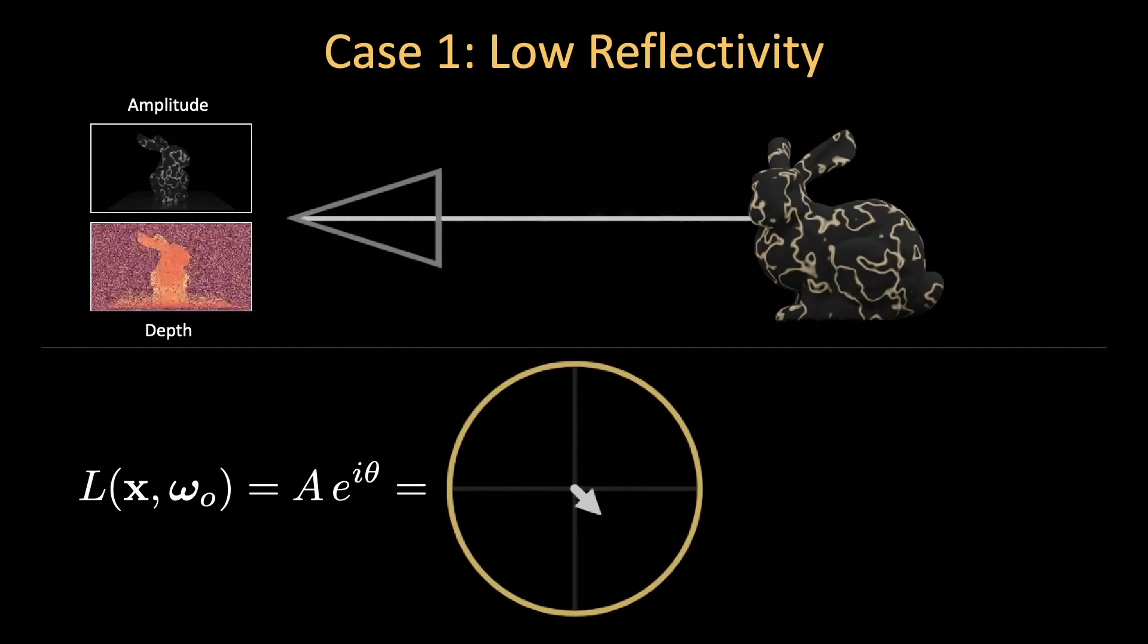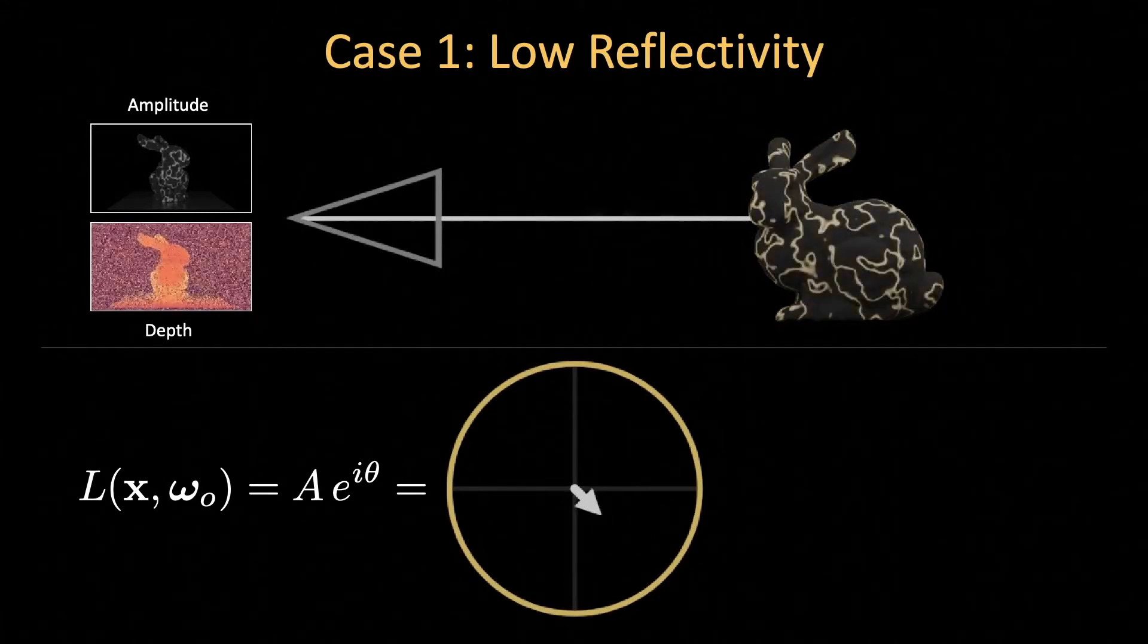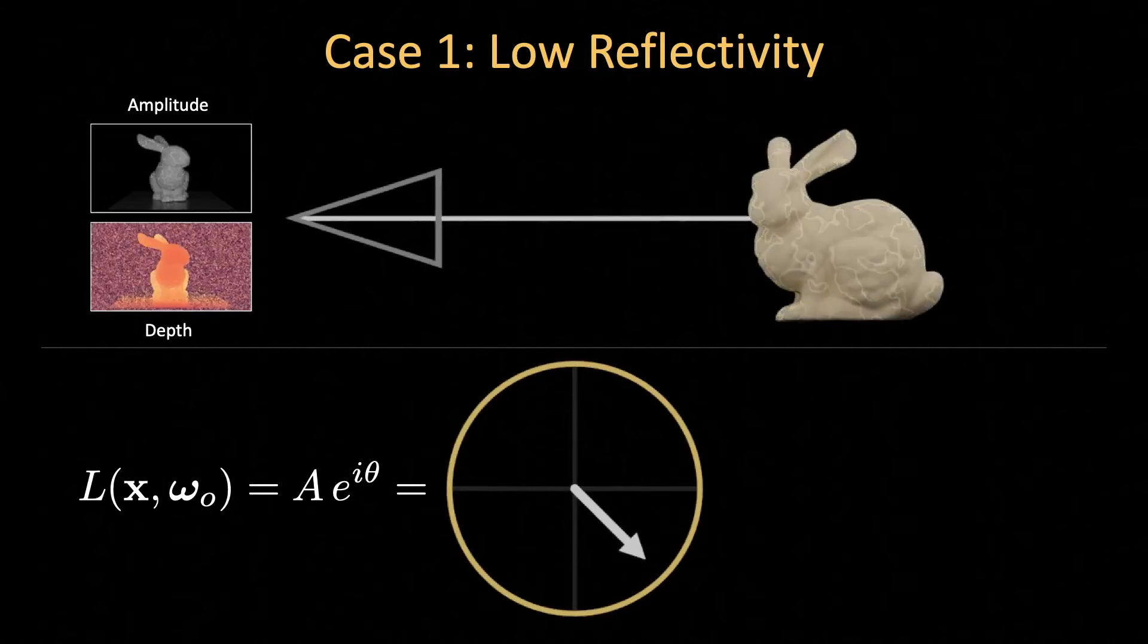First, it's important to note that when a surface has low reflectance, the amplitude of the phasor is small. In this case, a small amount of sensor noise might lead to a large amount of noise in the phase measurements.